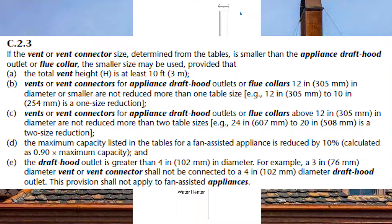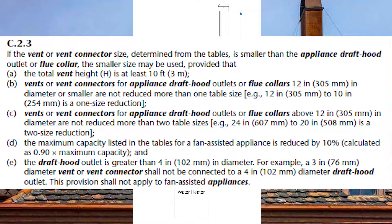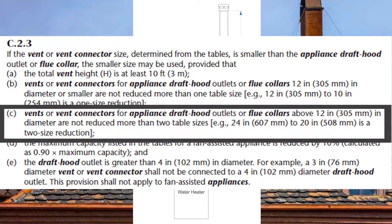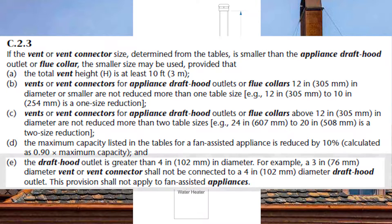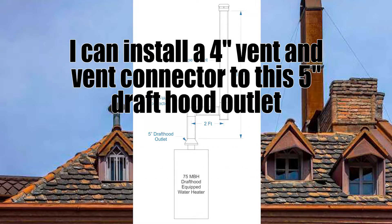There are a few requirements we need to follow to be able to do this. First, the vent height needs to be at least 10 feet tall. In our example the vent height is 15 feet, so we've met the first requirement. The next two requirements come down to sizing: if the draft hood outlet or flue collar is 12 inches or less, we may reduce by one table size; if it's greater than 12 inches, we can reduce by two table sizes. In my example I have a five-inch draft hood outlet, so I can only reduce by one table size. The last requirement, specifically for draft hood equipped appliances, is that the draft hood must be greater than four inches — which we are at five — so I can reduce by one table value, down to four inches.